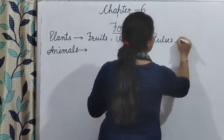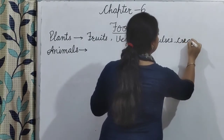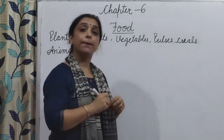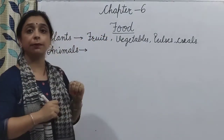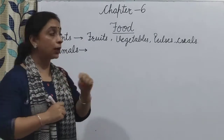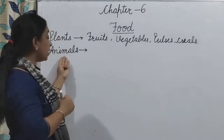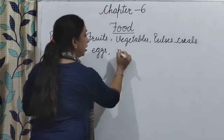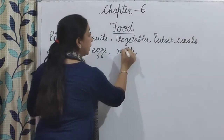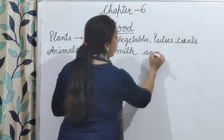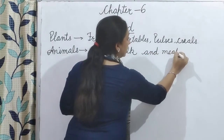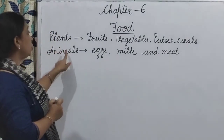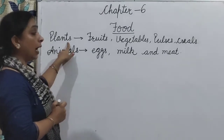Cereals भी मिलते हैं। Cereals means grain — wheat, rice, barley — ये सब चीज़ें भी हमें plant से मिलती हैं। जो rice और गेहूं आप खाते हैं, वो हमें plant से मिलता है। And animals give us eggs, milk, and meat.